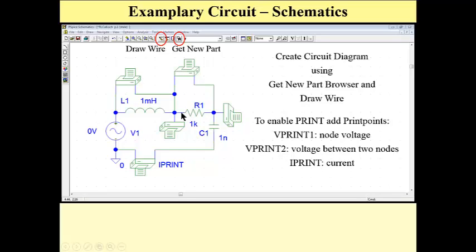As you can see, now our circuit, a very simple circuit, is quite complex because we have added one, two, three, four components, parts to print voltages and one component to print a current.